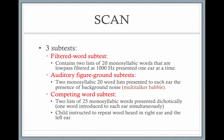There are three subtests: a filtered word subtest, which contains two lists of 20 monosyllabic words that are low-pass filtered at 1,000 Hz and presented one ear at a time, and the child has to say the word they hear. An auditory figure ground subtest with two monosyllabic 20-word lists presented to each ear in the presence of background noise — having trouble with background noise is the hallmark of auditory processing disorder. And a competing word list, where two word lists are presented dichotically, one word introduced to each ear simultaneously, and the child is instructed to repeat the word heard in the right ear and then the left ear.